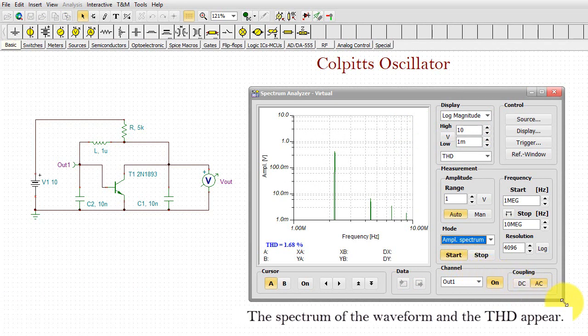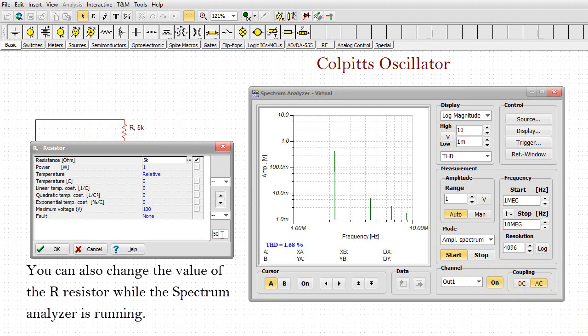Click the Start button on the Spectrum Analyzer. The spectrum of the waveform and the THD appear. You can also change the value of the R resistor while the spectrum analyzer is running.